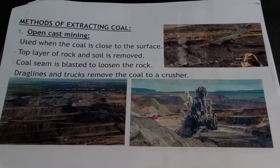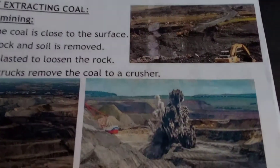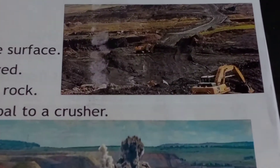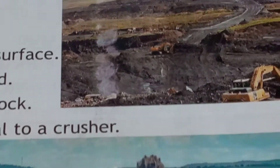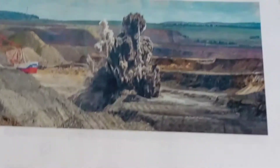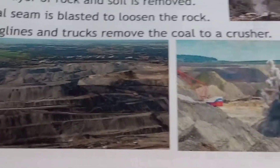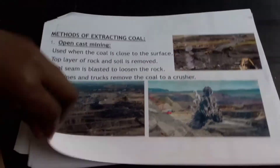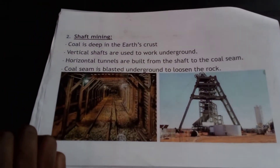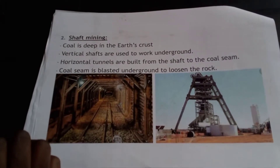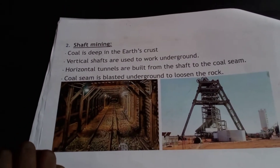The coal is transported to a crusher. This is open cast mining. This method of extraction will have some disadvantages, especially on our environment, because we are digging a hole in the ground. Coal can also be extracted from underground by what we call shaft mining.